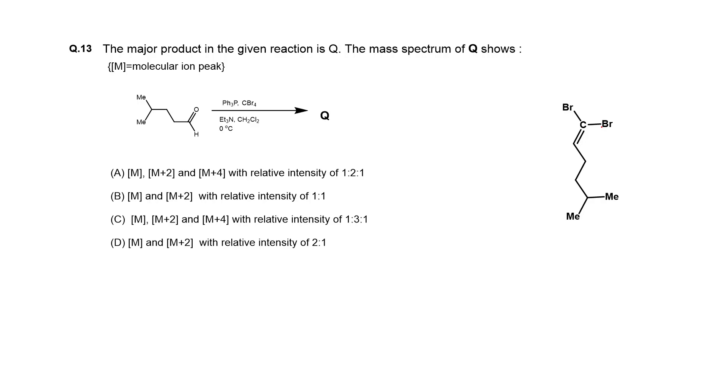Now we have to know what is the mass spectrum of Q. To know the mass spectrum for this compound, you must know that for halide species having chlorine or bromine type compounds, there is an isotopic peak.